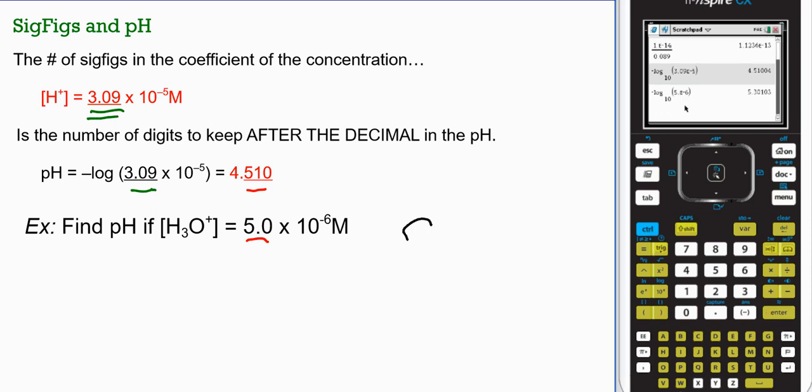There's my 2 sig figs I kept after the decimal because I had 2 sig figs in my concentration.